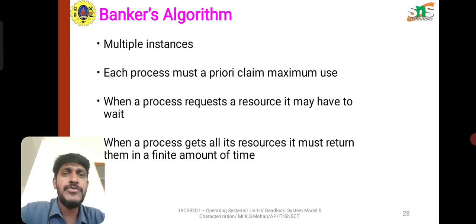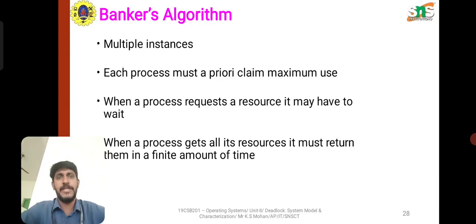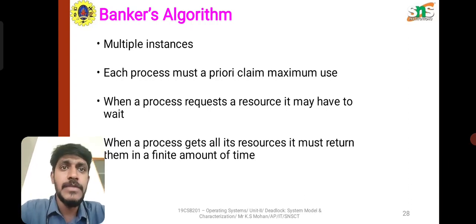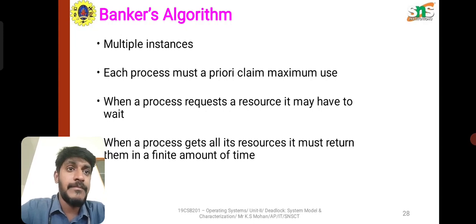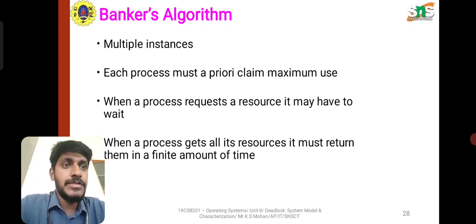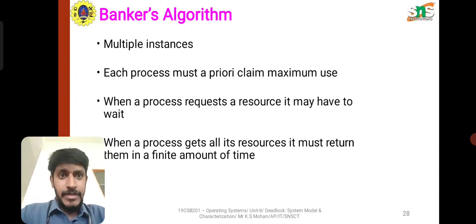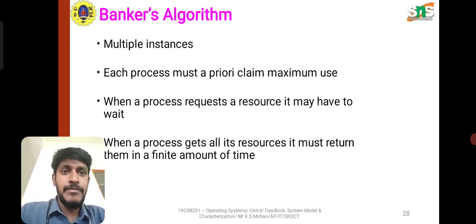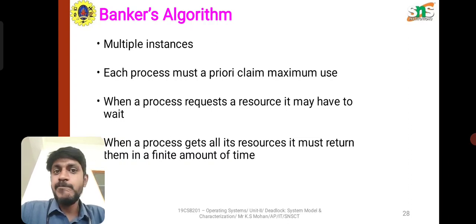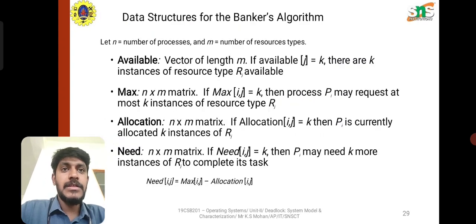The most popular algorithm used in deadlock avoidance is the Banker's Algorithm, used for multiple instances. Each process must declare its maximum resource usage in advance. When a process requests a resource it may have to wait. When a process gets all its resources it must return them within a finite amount of time.